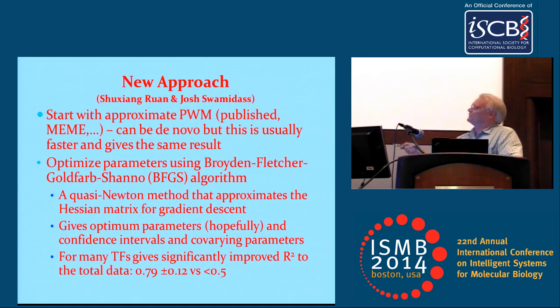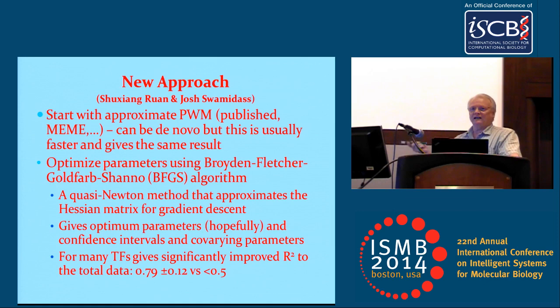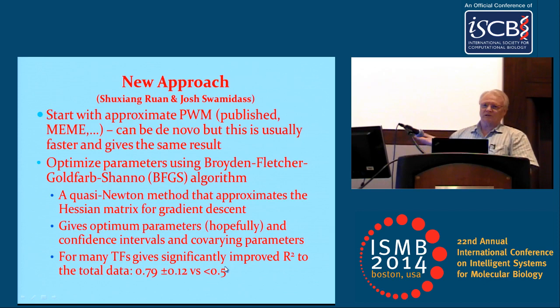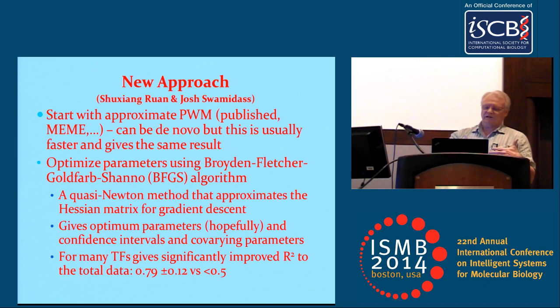We run this algorithm, optimize those parameters — the weight matrix for protein specificity, the protein concentration, and so on. Hopefully we get optimal parameters, though there's no guarantee — it's a nonlinear regression. On the particular data sets we've looked at so far, when we ask how good a fit we get to the complete raw data, we usually get R-squared of about 0.8, compared to their methods which give R-squared of about 0.5. If we just look at the top sequences, they're similar, but fitting the entire data set — from very high-affinity to low-affinity sites — we do much better.